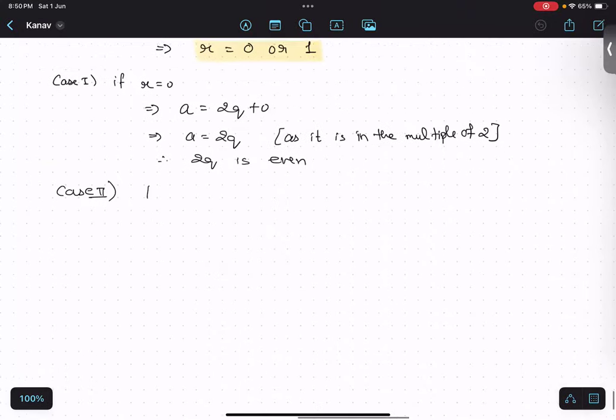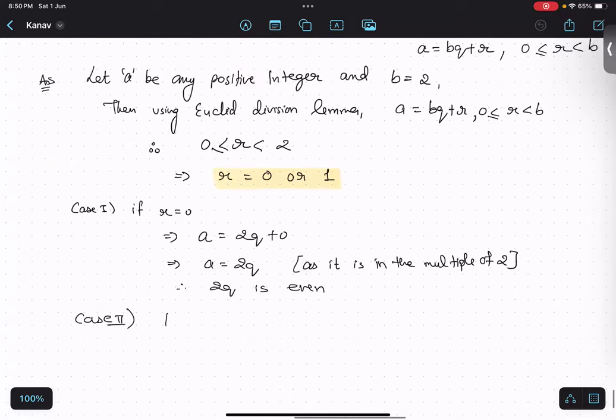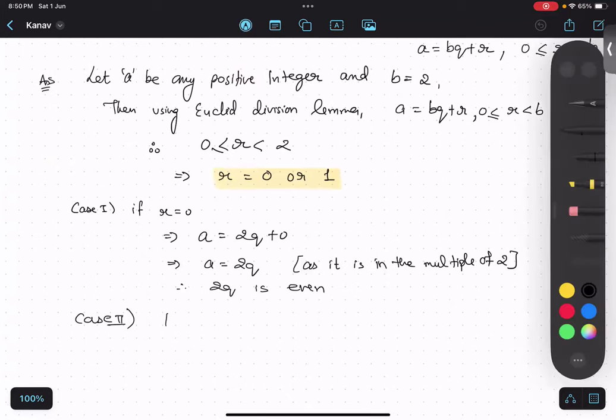A equals to 2q plus 1. If r equals to 1, then a equals to 2q plus 1.